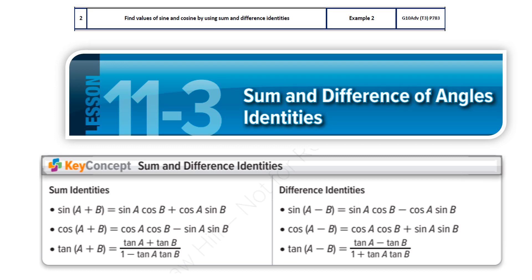In this video, we are going to be solving questions based on lesson 11.3 of Trigonometry, which is sum and difference of angles and identities. Before we proceed to solve the questions — example 2 onwards from your math book — I would really advise you to learn the following identities that you see on the screen. Once you learn them, it will be very easy for you to solve the questions.